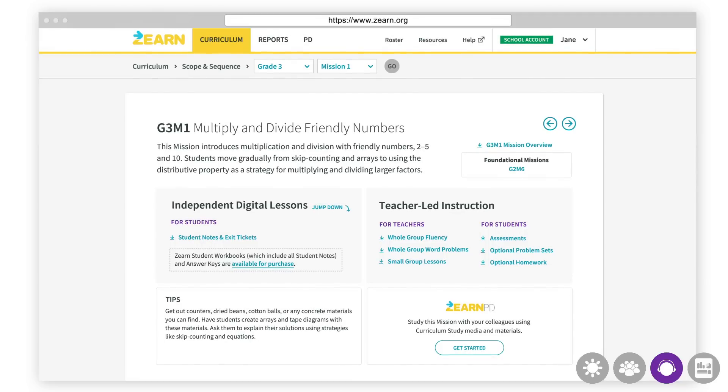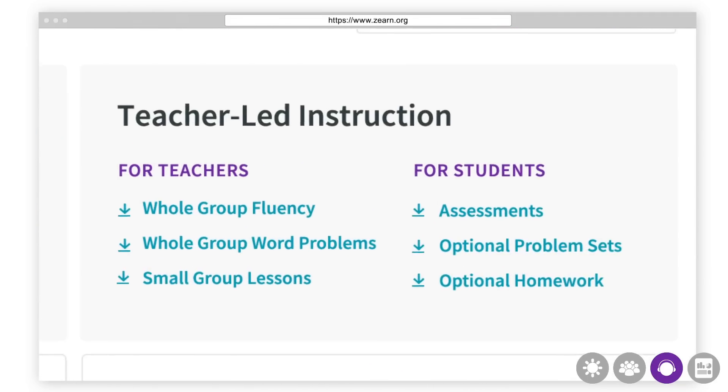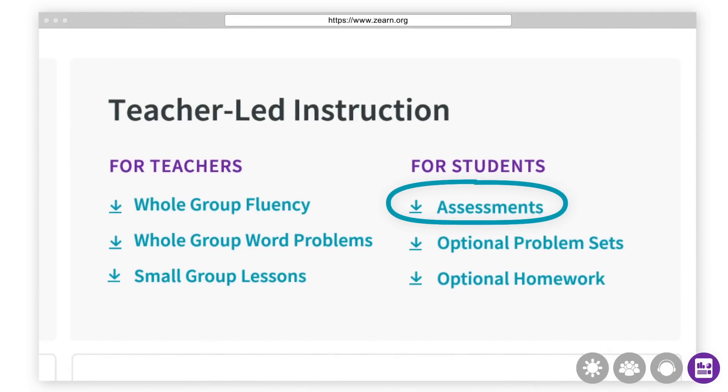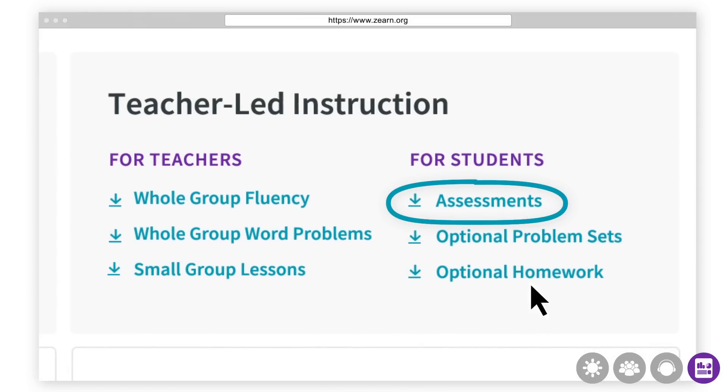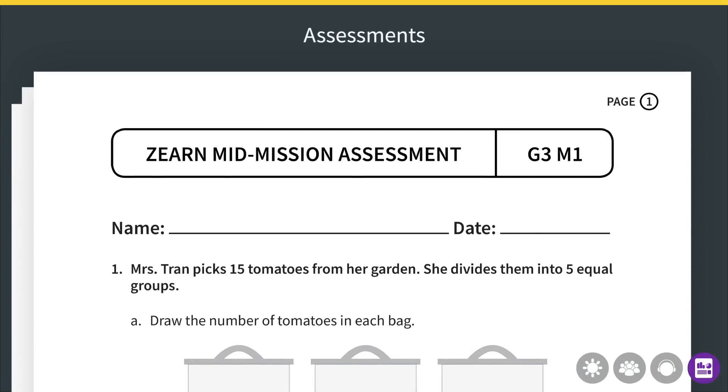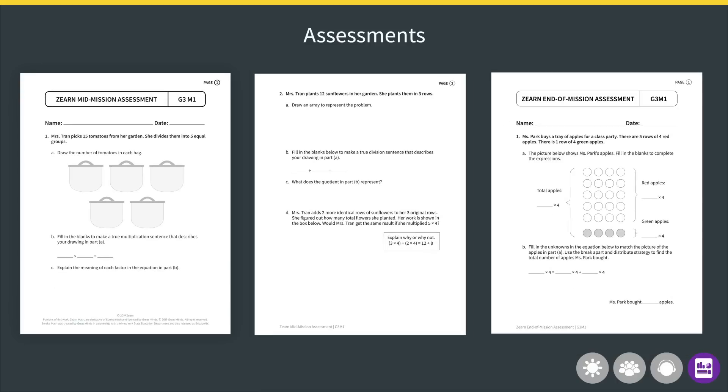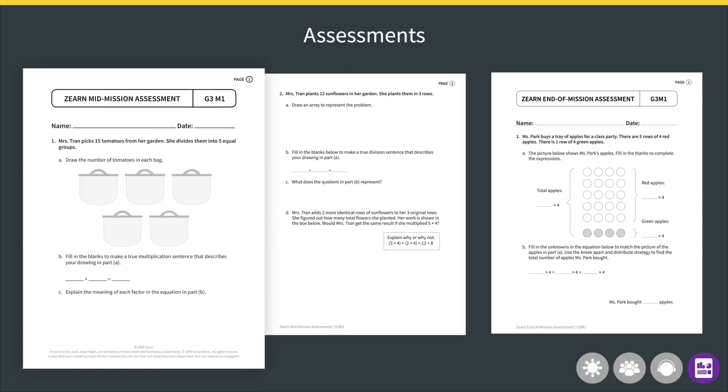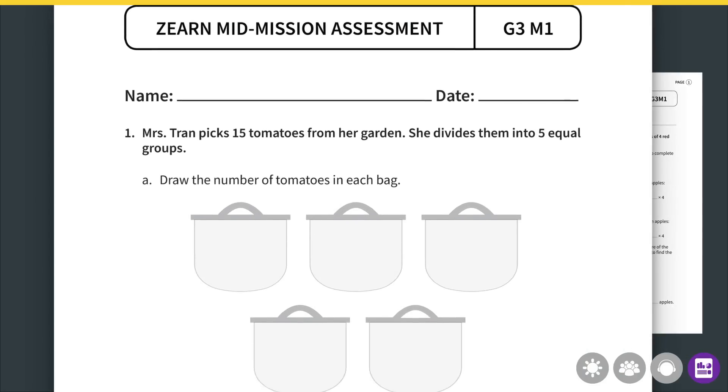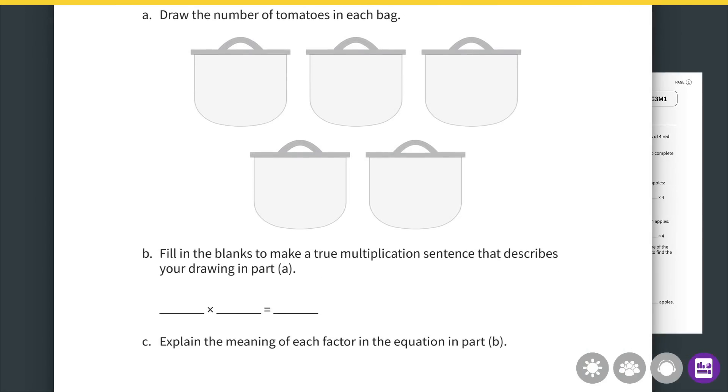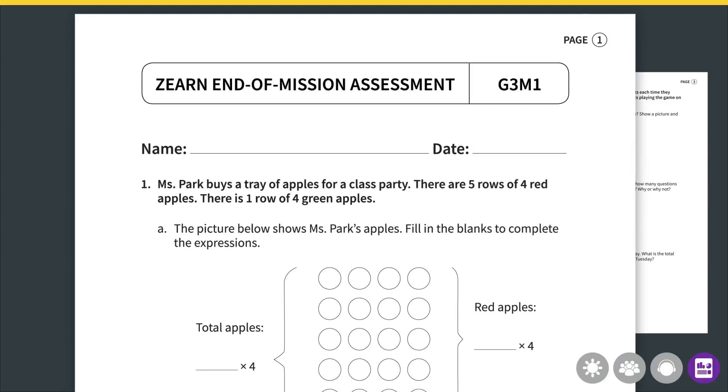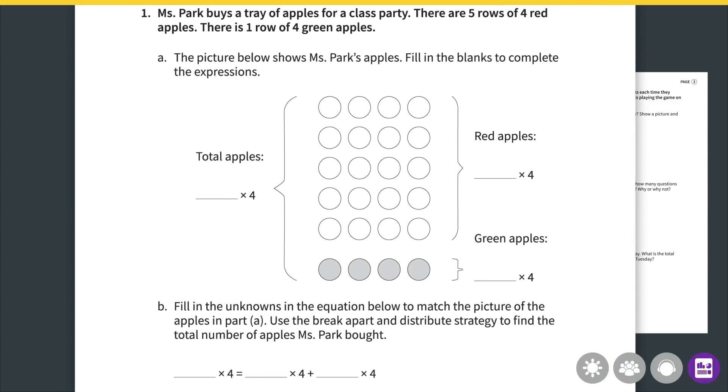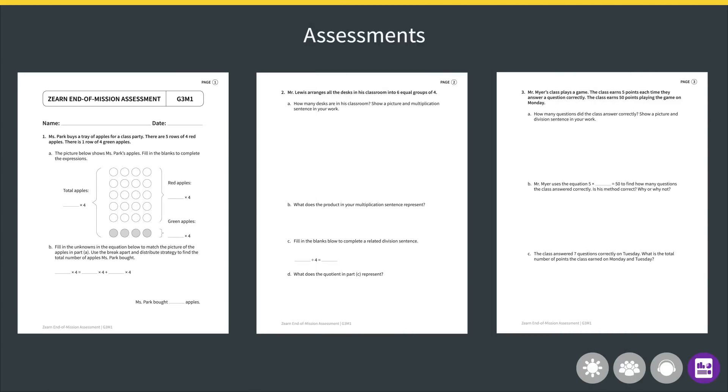Zearn Math curricular materials include embedded formative assessments that focus on the big ideas of mathematics and allow students to demonstrate their understanding. Assessments provide teachers with precise and actionable feedback that can be used to inform instruction and respond to student needs. Our mid- and end-of-mission paper assessments consist of open response items that require students to show their work or explain their thinking in a variety of ways.